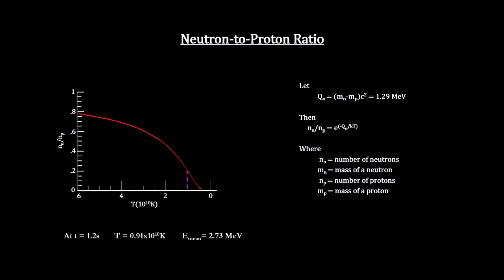But as the universe continued to expand and cool, the neutrinos decoupled from the protons and neutrons. Using the best available laboratory information, this would have occurred when the temperature cooled to nine billion degrees, when the universe was around one second old. At that point, two things happened.